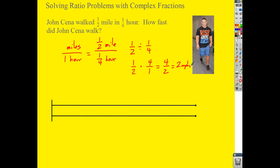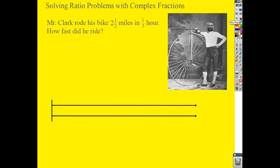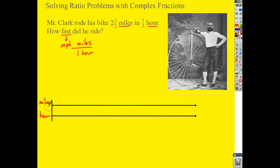Nice work, John Cena. Let's take a look at another one. Mr. Clark rode his bike two and a half miles in one-third of an hour. How fast did he ride? Let's identify our units: I've got miles and hours, and I need to know how fast. Miles per hour means miles in one hour, so I've identified my units and I want to find one hour.